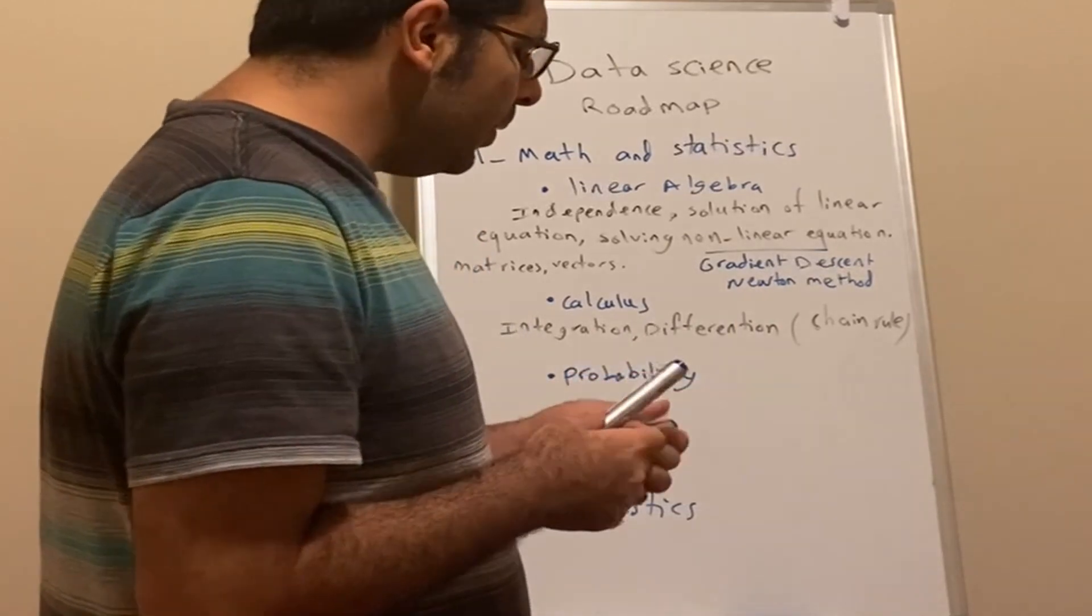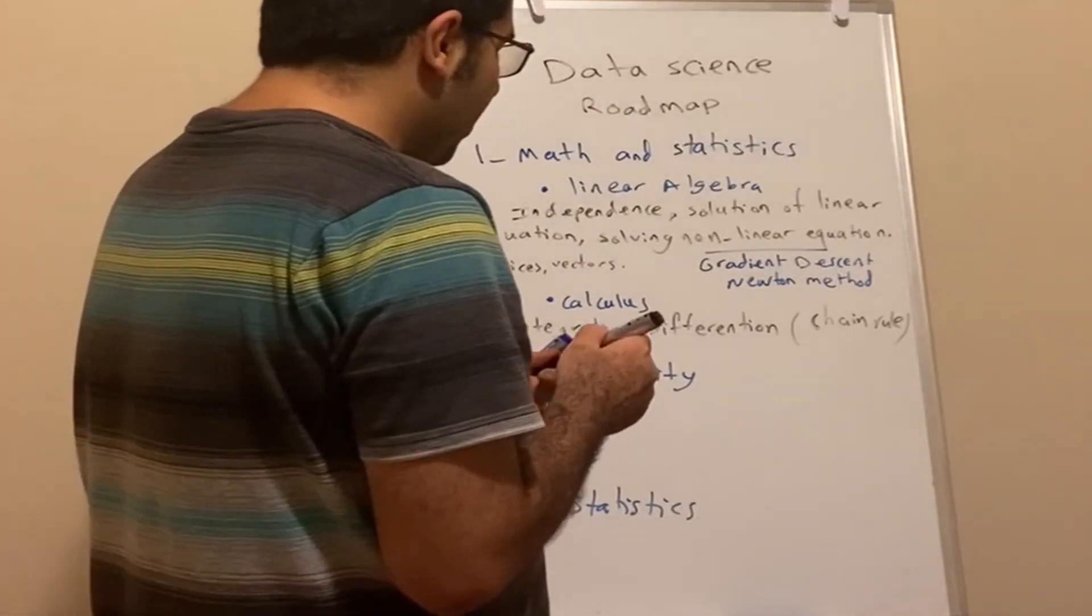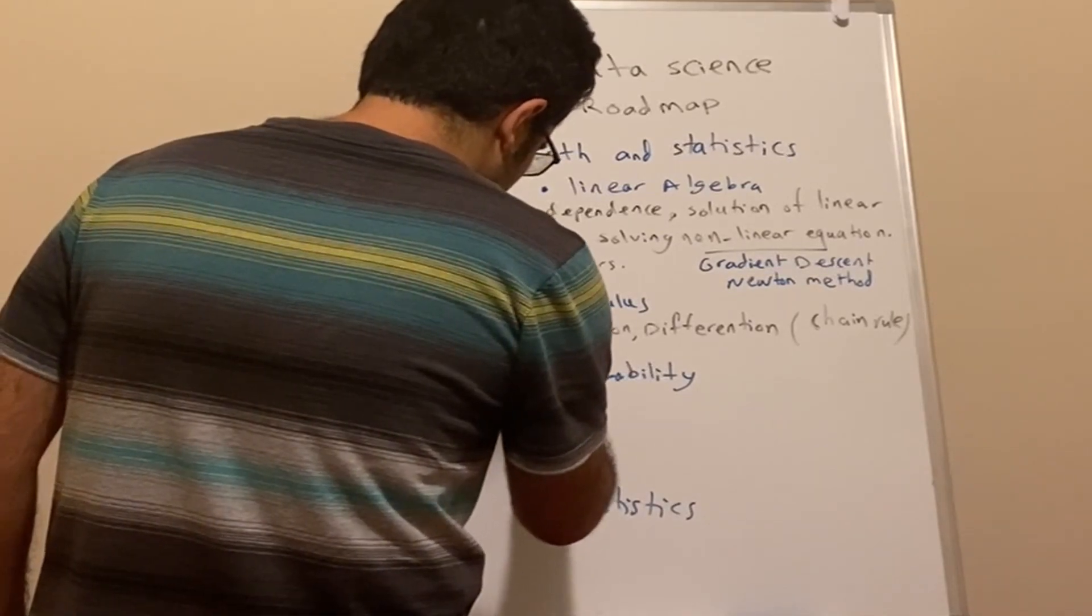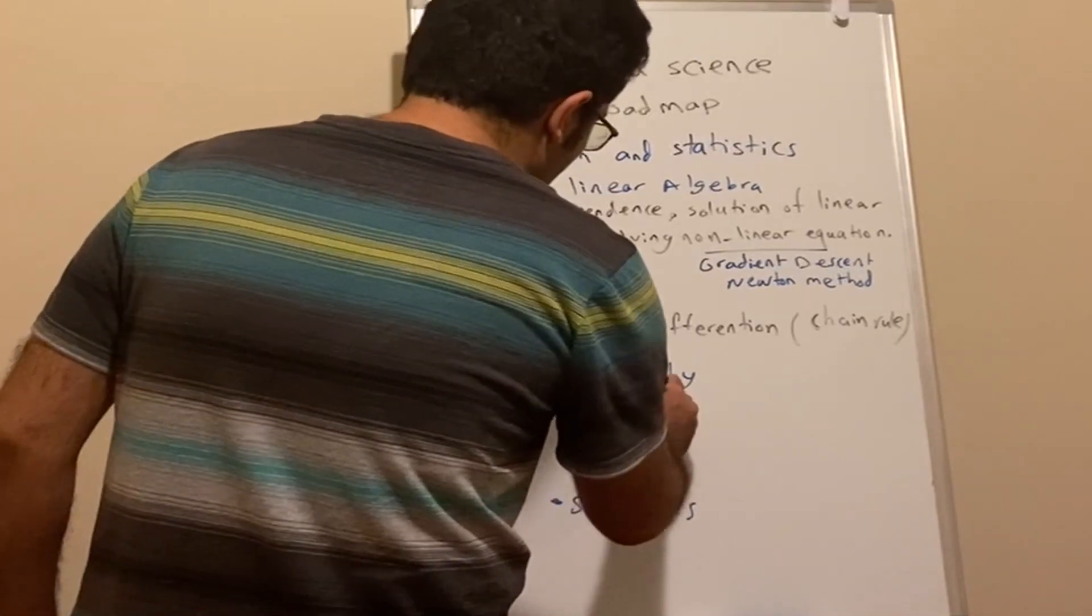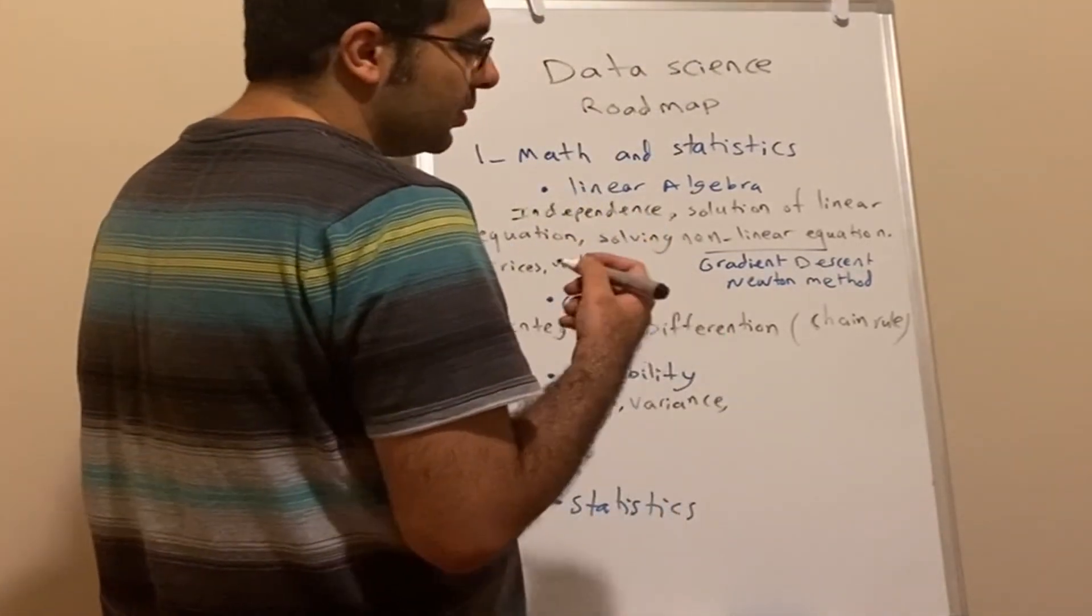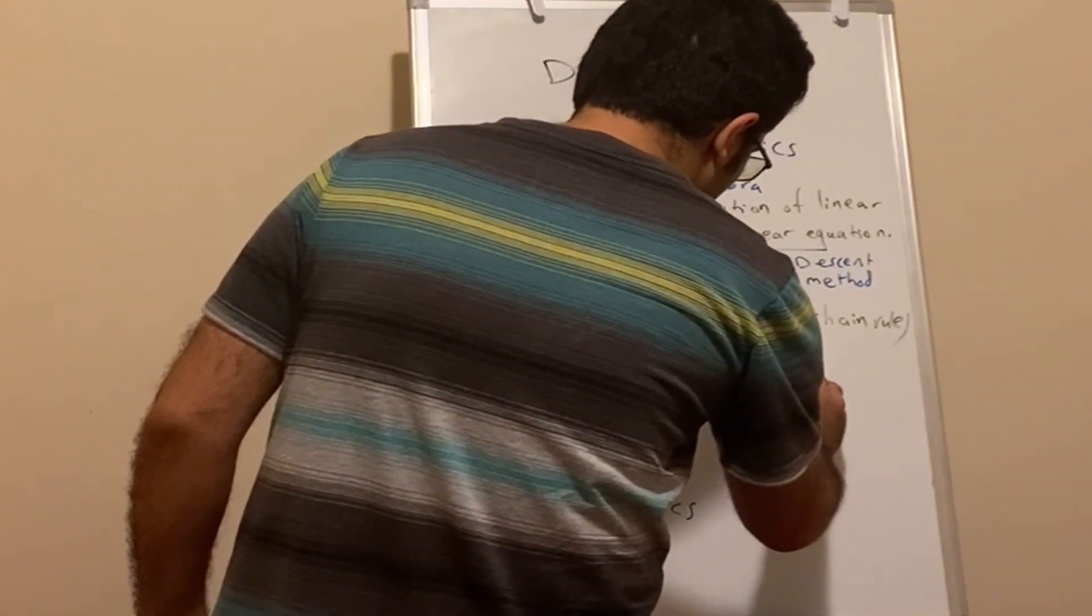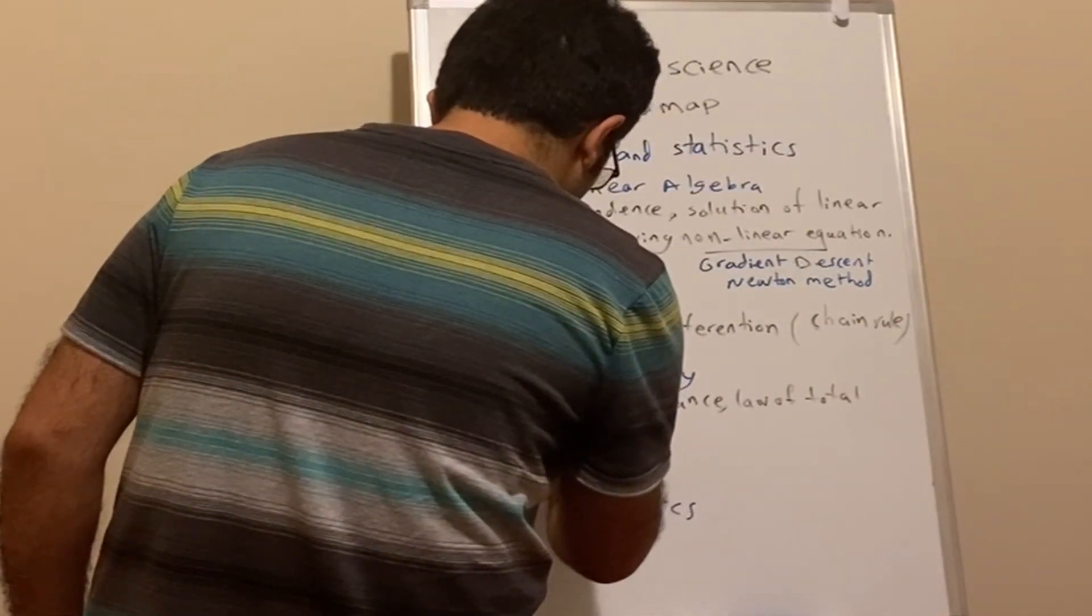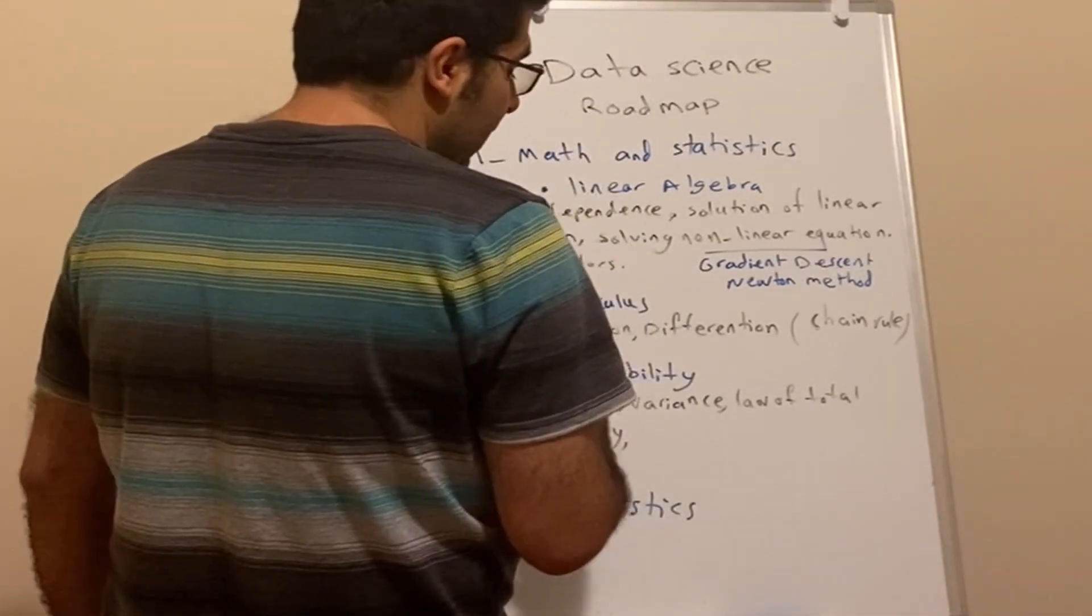From the probability side, probability is the basis of machine learning concepts. We need to understand expectation, variance, law of total probability, and Bayes' law. This is the most important.